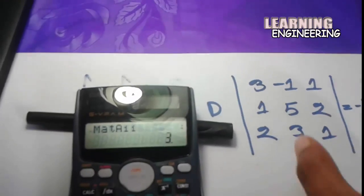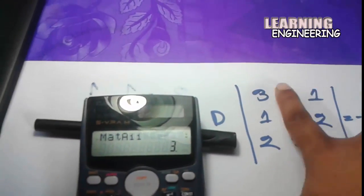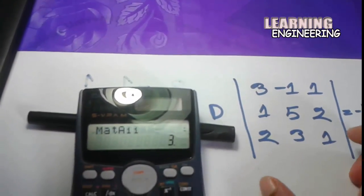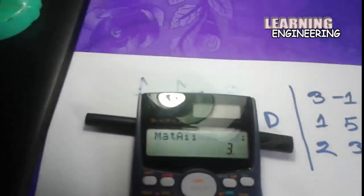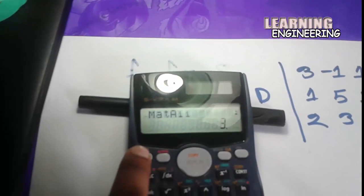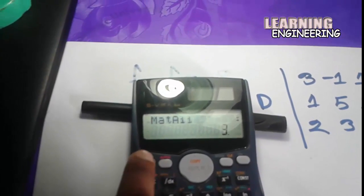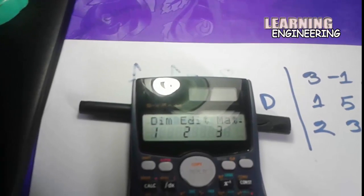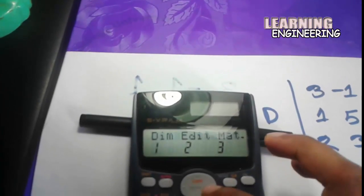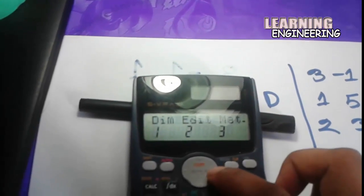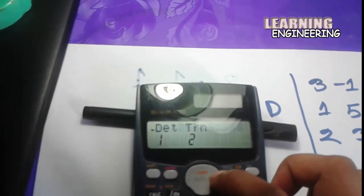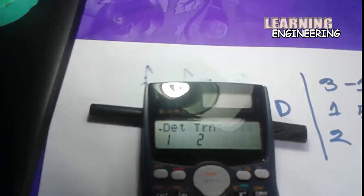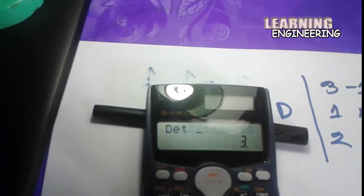Here is the matrix — three by three dimension, with all column and row values entered. Then I will press Shift and 4 again. Here is the determinant option. DET is 1.